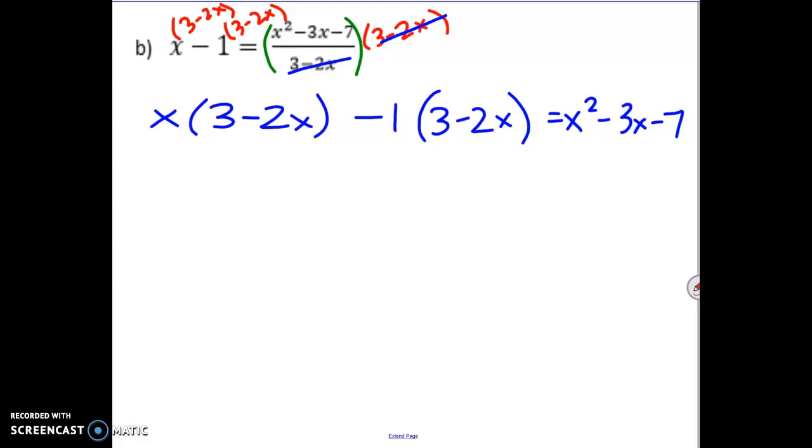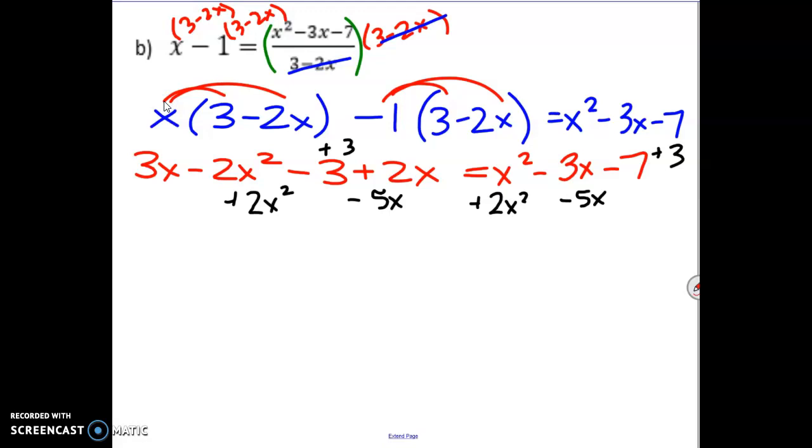So from here, we'll just multiply everything out. We'll get 3x minus 2x squared minus 3 plus 2x, and that's going to equal x squared minus 3x minus 7. I'm just multiplying things out. Then we'll combine like terms. So when I combine like terms, I'm just going to try to move everything to one side at the same time. So I have 1x squared and 2x squared is 3x squared, minus 3x minus 5x is minus 8x, and minus 7 plus 3 would be minus 4. So here's our quadratic.